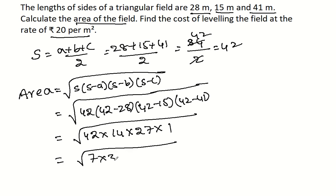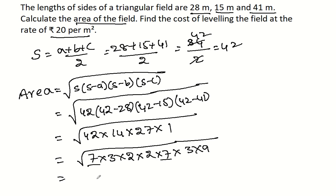We simplify by writing 42 as 7 times 3 times 2, 14 as 2 times 7, and 27 as 3 times 9. Pairing the factors: 7 times 7, 3 times 3, and 2 times 2, then taking the square root gives 7 times 3 times 2, which equals 42. Then the remaining root of 9 is 3.